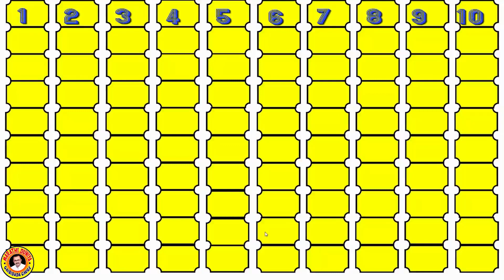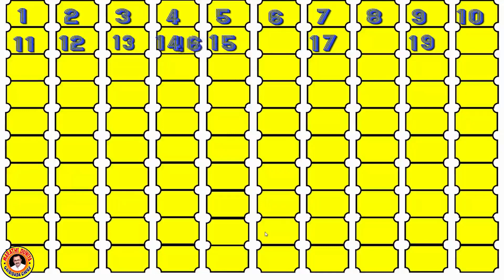Now we complete the second line. The given numbers are 12, 13, 15, 17, and 19, and the remaining numbers are 11, 14, 16, 18, and 20. We complete the line from 11 to 20.